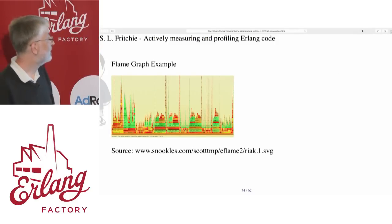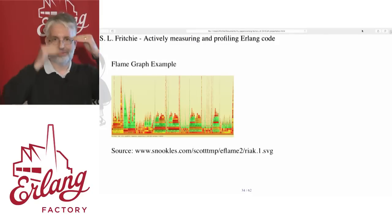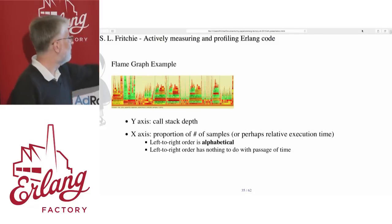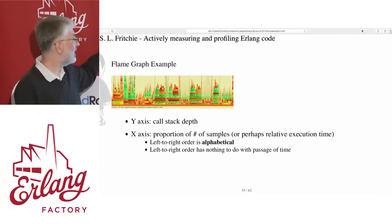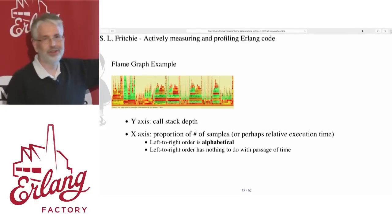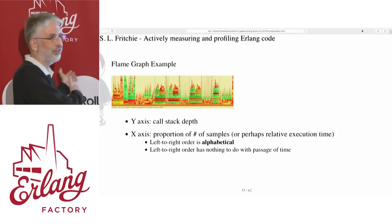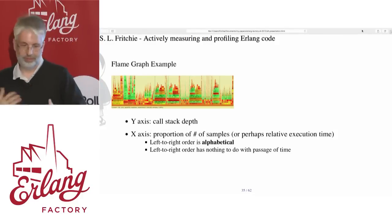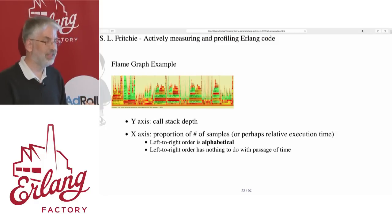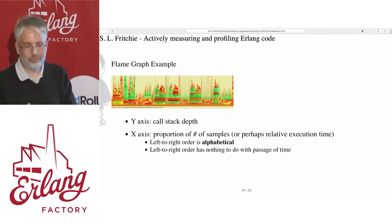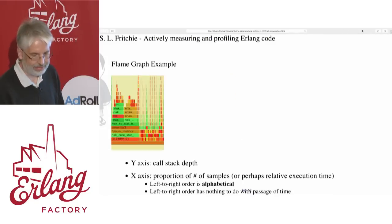Here's a flame graph of a Riak system. The colors don't mean much — they're there just to help the eye differentiate the different levels on the graph. The y-axis is the call stack depth. Left to right order doesn't mean anything; things are sorted in lexicographic order by function name. The width, however, has to do with the proportion of samples. Depending on the technique used for gathering samples, it could be a number of samples on a time-based frequency sampling, or it could be execution time — wall clock time or virtual CPU time.